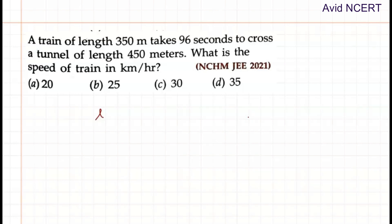The data we have here is: the length of the train equals 350 meters and it takes 96 seconds. The time taken by it is 96 seconds and the length of the tunnel is 450 meters.